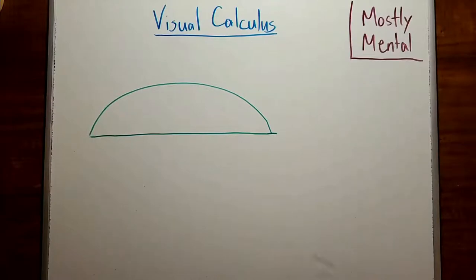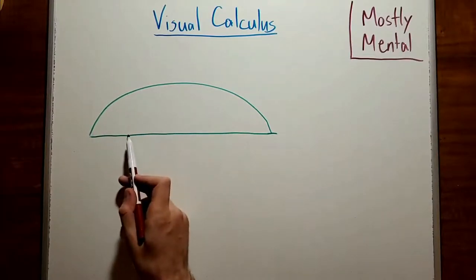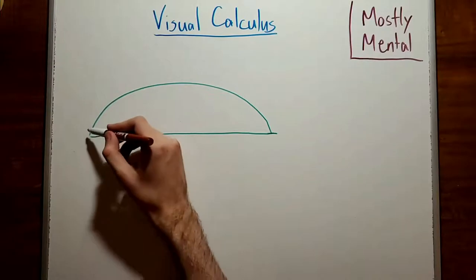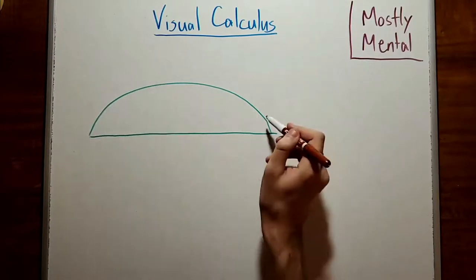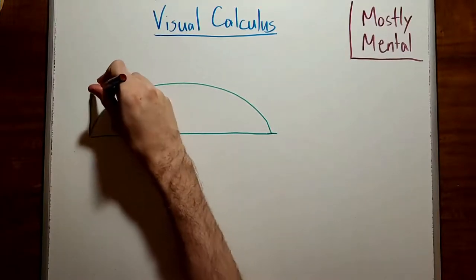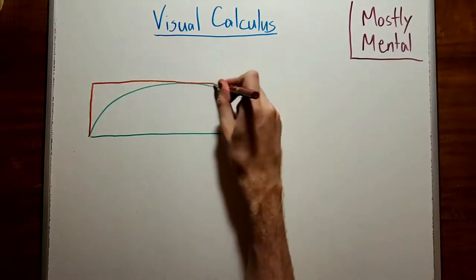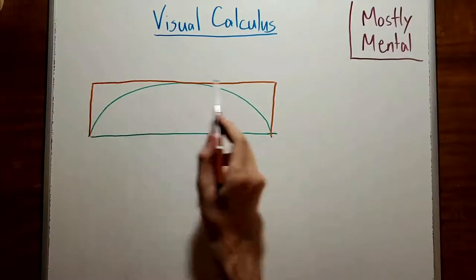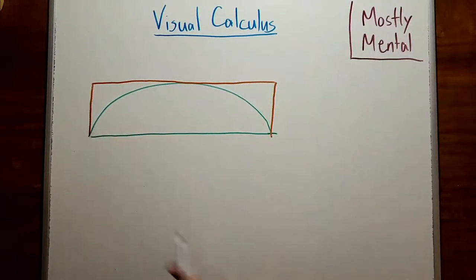So our cycloid will look something like this. Once again, we want to find the area under the curve. Actually, we're looking at tangents which are going to be outside, so it'll be easier to find the area above the curve. So let's draw a rectangle around it, and find the area of these two regions.